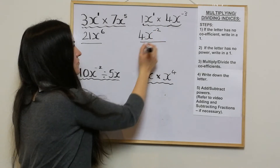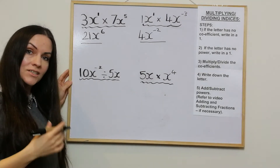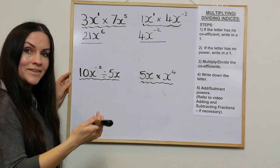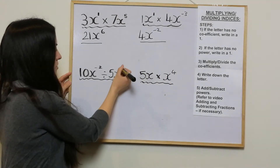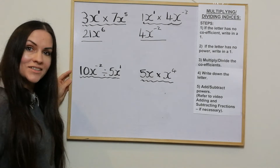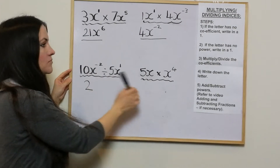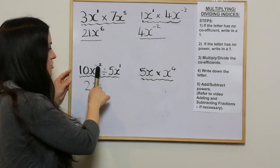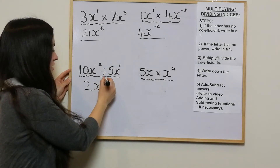These are quite straightforward examples. The next one is a divide — 10x to the negative 2 divided by 5x — just showing that the method applies for dividing as well as multiplying. Both letters have coefficients. This one has no power, so we write in a one. This time it's dividing, so we divide the coefficients: 10 divided by 5 is 2. Write down the letter x. Because it's dividing, we subtract the powers: negative 2 subtract 1 is negative 3.